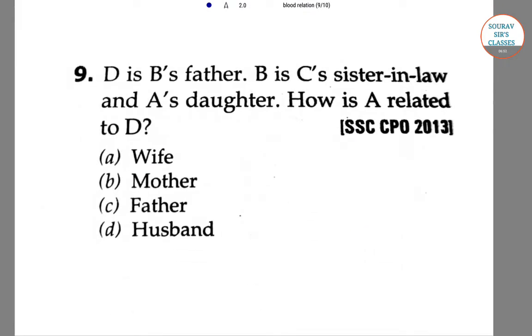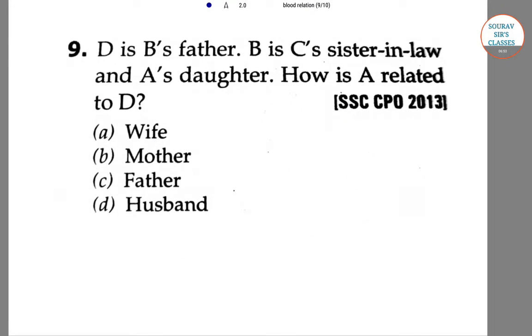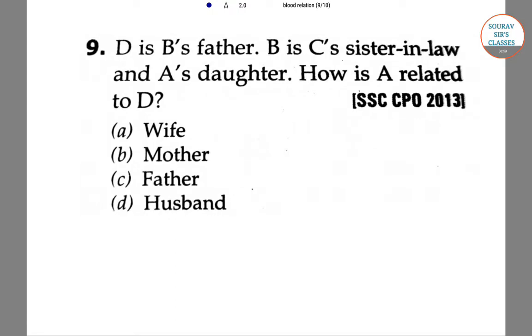In the next question: D is B's brother, B is C's sister-in-law, and A is a daughter. How is A related to D? From the following family diagram: D and A form a couple.